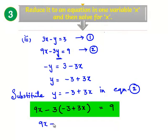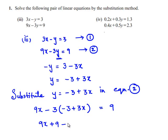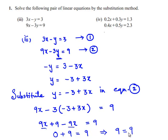So 9x, minus of minus becomes plus, 3 times 3 is 9, minus 3 multiplied by 3x becomes minus 9x, which is equal to 9. Now 9x minus 9x is 0, and we get plus 9 equals 9. That implies 9 is equal to 9. We can conclude that the given set of linear equations has an infinite number of solutions.